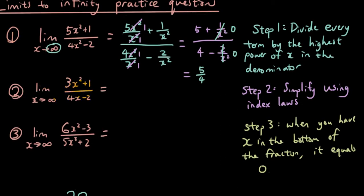So the second question, I'm going to divide every single term by x² over 4, sorry not x², divided by x, because the highest power of x in the denominator is just x.